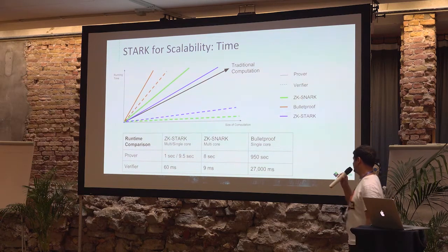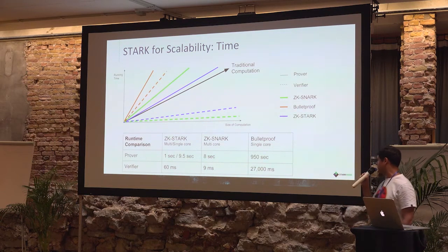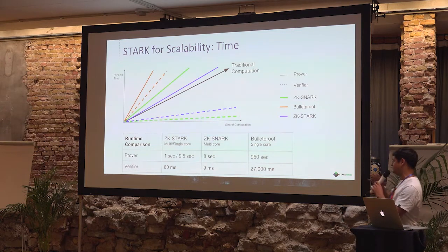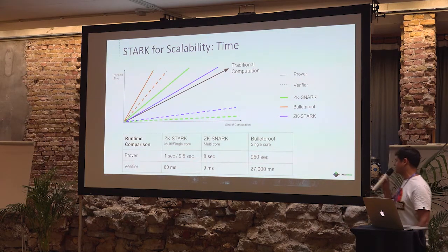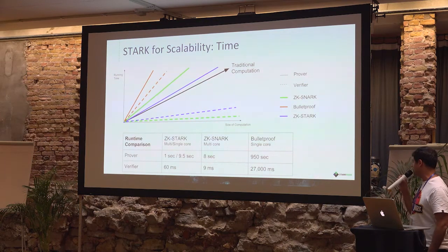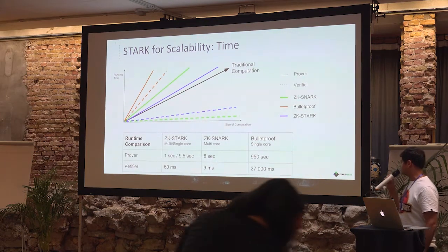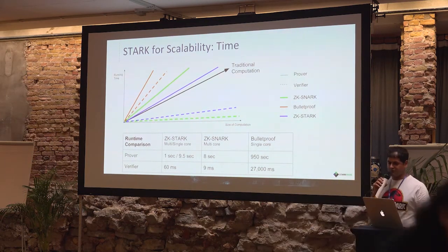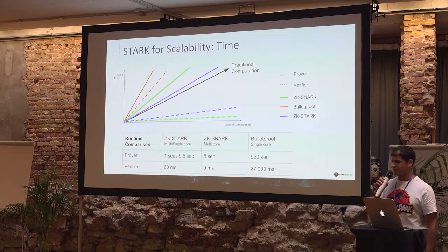The comparison between STARK and Bulletproof is on the single-core machine. The STARK prover is about 10 times faster than the SNARKs prover, and about 100 times faster than the Bulletproof prover.